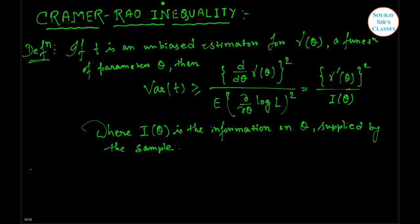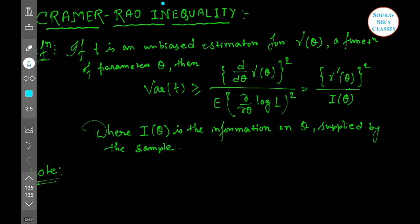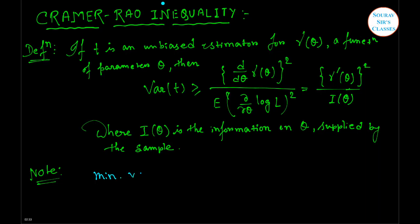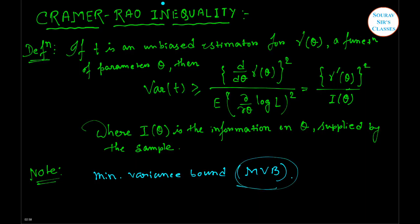Now here is a short note — please note it. An unbiased estimator t of gamma(theta), for which the Cramér-Rao lower bound is attained, is called a Minimum Variance Bound estimator, MVB estimator. It is called the Minimum Variance Bound, MVB.